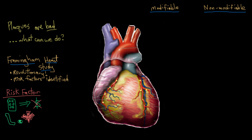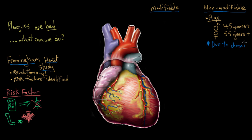An example of a non-modifiable risk factor is age — you can't change how old you are. In coronary artery disease, being 45 years or older puts men in a higher risk bracket, and for women it's over 55. These aren't magic numbers; it's just that by the time you reach about 45 in men and 55 in women, enough time has passed for significant plaque buildup. Atherosclerosis is a chronic condition that develops over a long period of time.